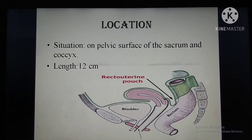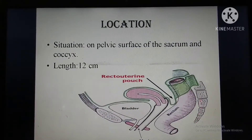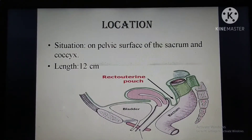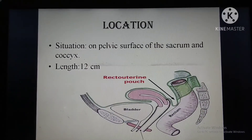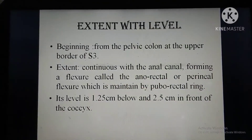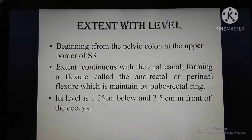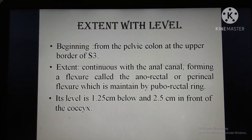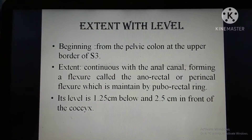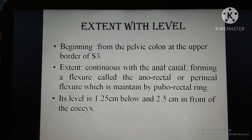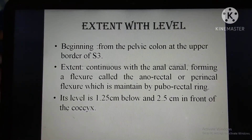Location: it is on the pelvic surface of the sacrum and coccyx. Length is 12 centimeters. Extent: from the pelvic colon at the upper border of the S3 vertebra, it continues with the anal canal forming a flexure called the anorectal flexure, which is maintained by the puborectal ring.